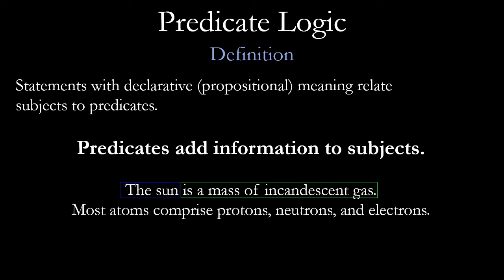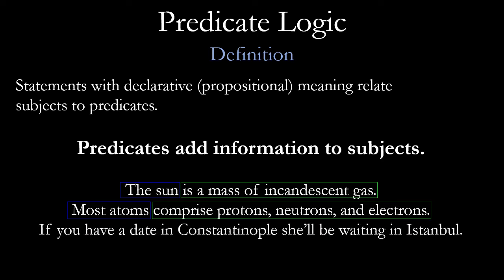Take a sentence like 'most atoms comprise protons, neutrons, and electrons.' In that case, the subject is 'most atoms' and the predicate is 'comprise protons, neutrons, and electrons.' Take another one: 'If you have a date in Constantinople, she'll be waiting in Istanbul.' This is a compound sentence, and the subjects are 'if you have a date in Constantinople' and 'she will be waiting in Istanbul.'